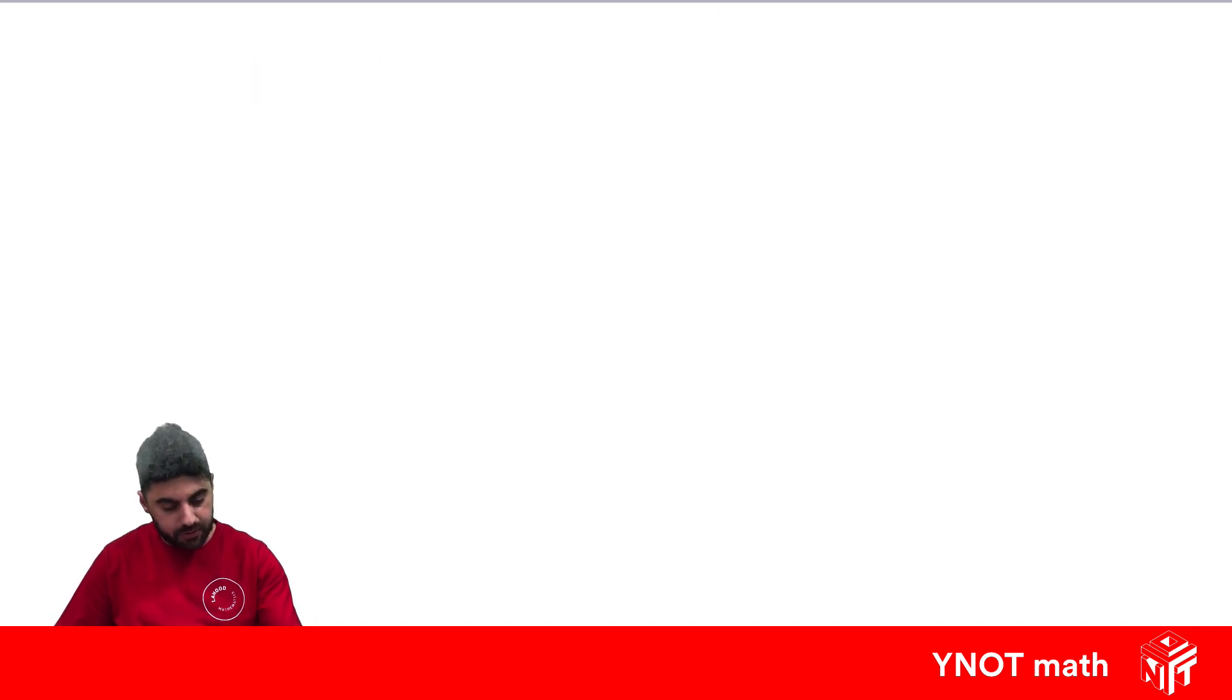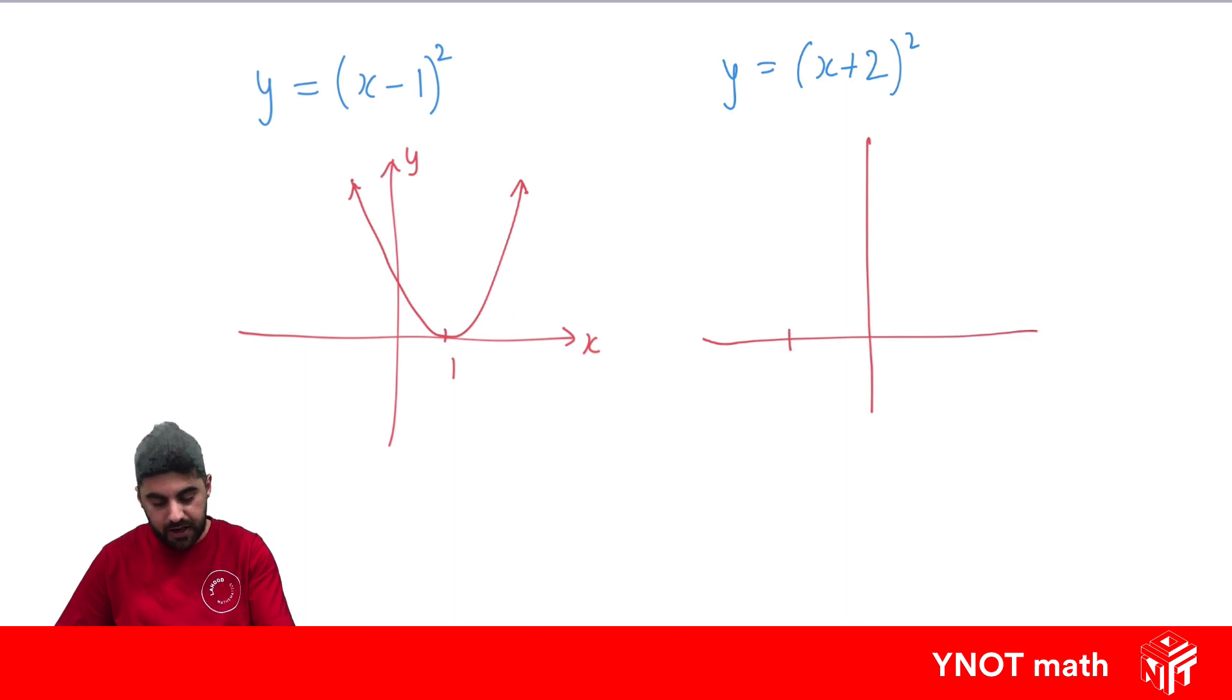We can also shift parabola sidewards if the equation is like so. If we had y equals (x minus 1) squared - so when we have a perfect square, this means we have our normal parabola y equals x squared that shifted sidewards. Now with it being minus 1, you'd think it would get shifted this way by 1, but minus 1 actually shifts it to the right by 1. So the vertex would be at 1 and we have a concave up parabola like so. If we have y equals (x plus 2) squared, this is our normal parabola y equals x squared but shifted to the left by 2.